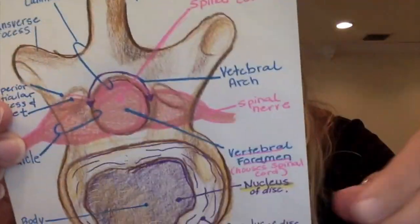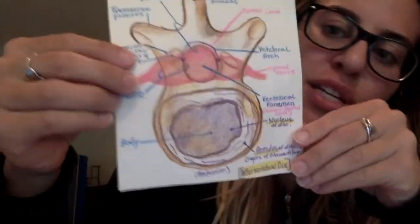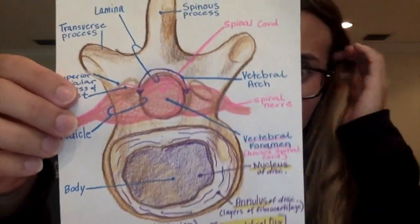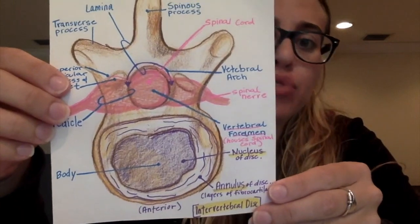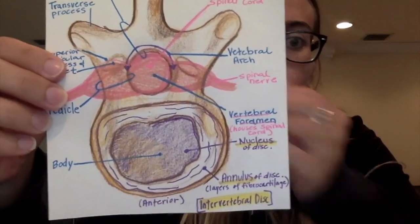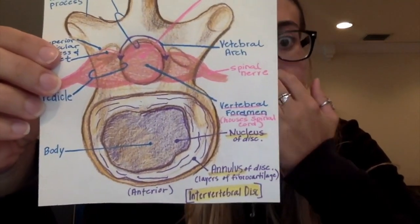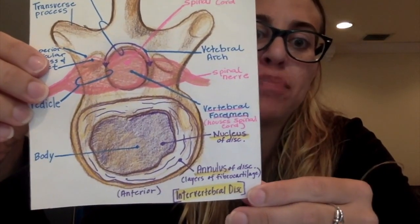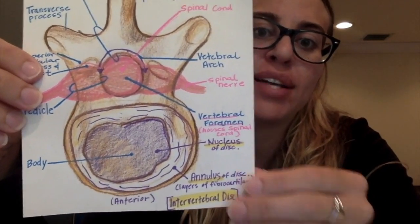Here's a picture of a superior view of an intervertebral disc. The intervertebral foramen is the opening between the adjacent vertebrae. Intervertebral discs unite the bodies of adjacent vertebrae, which is the passage for spinal nerves to exit the vertebral column.